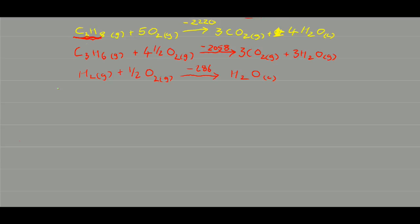The reversed equation is: 4H2O(l) + 3CO2(g) → C3H8(g) + 5O2(g), with a value of plus 2220 kilojoules per mole.